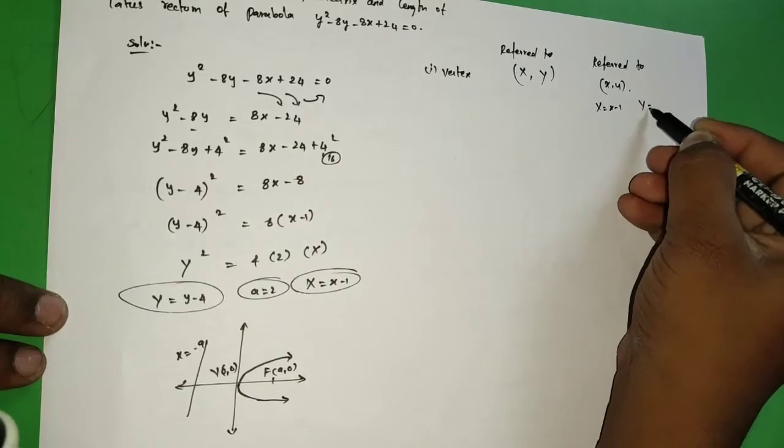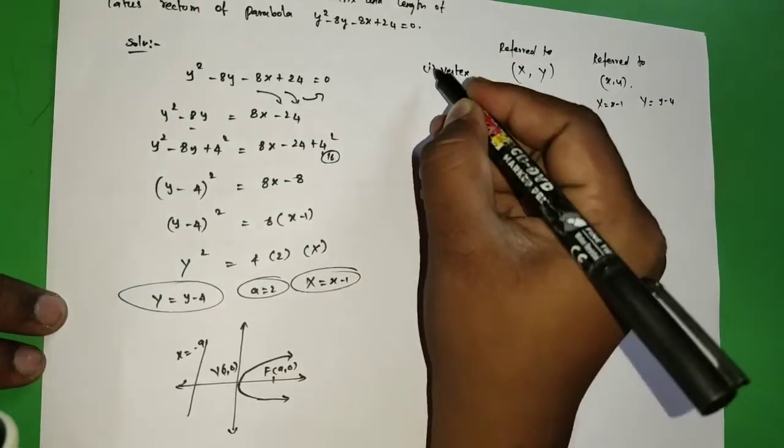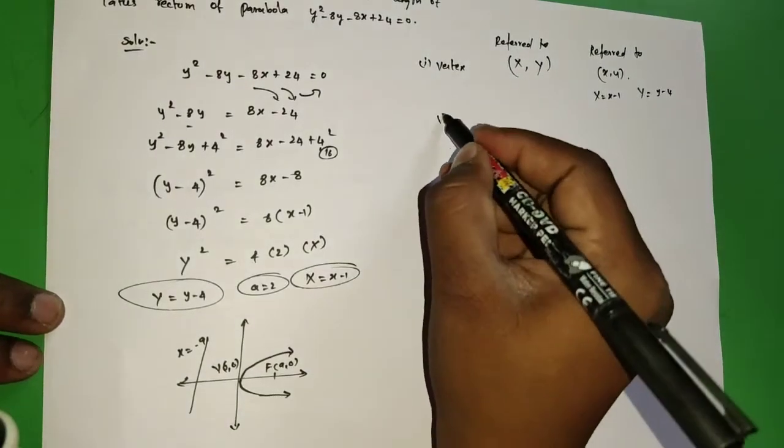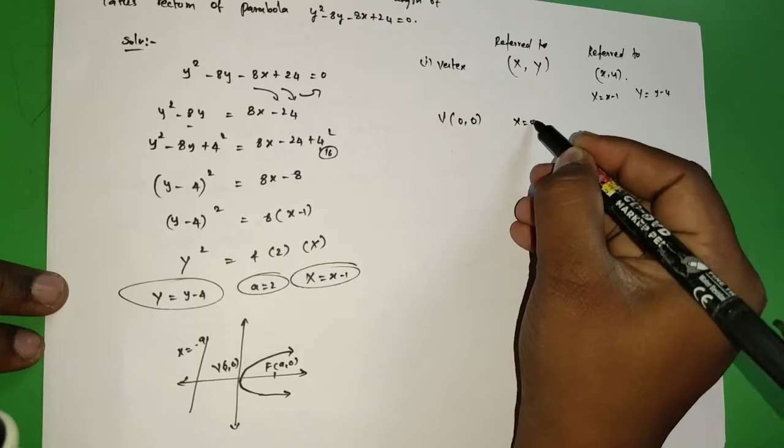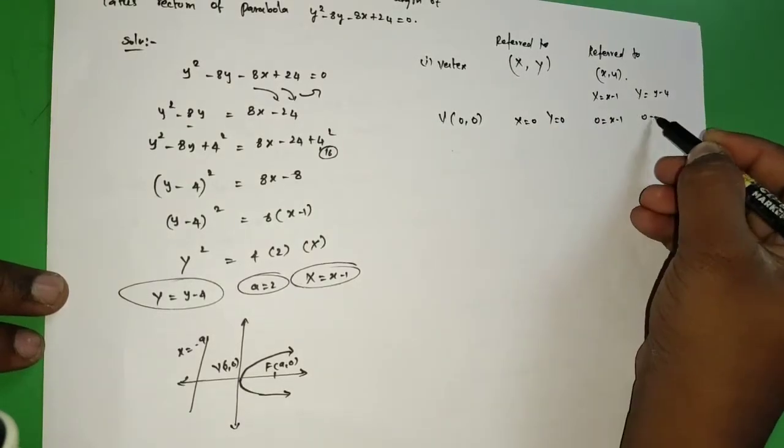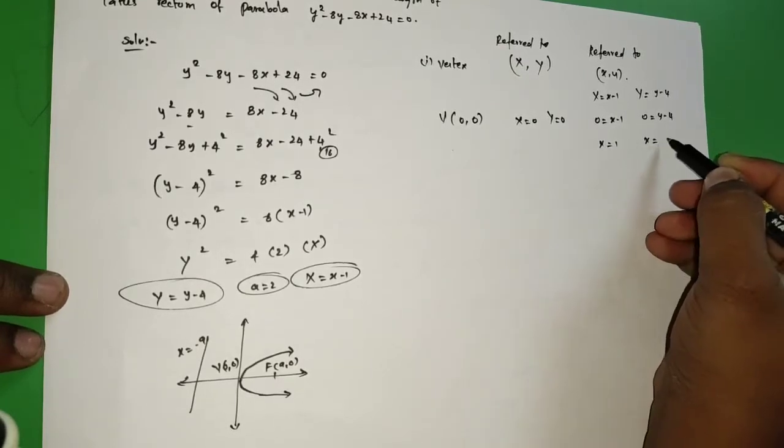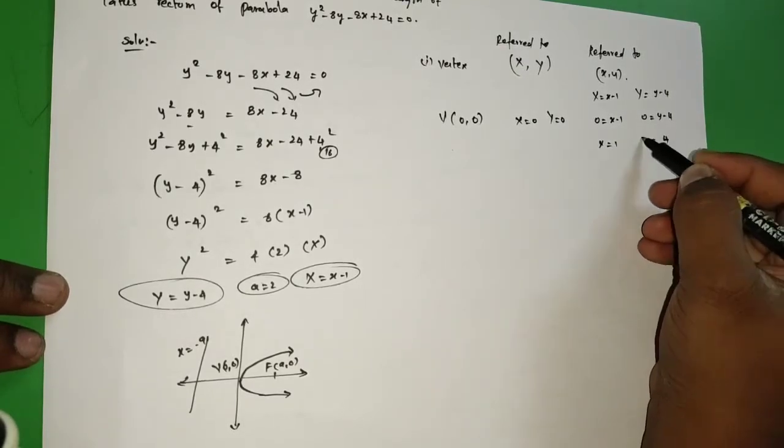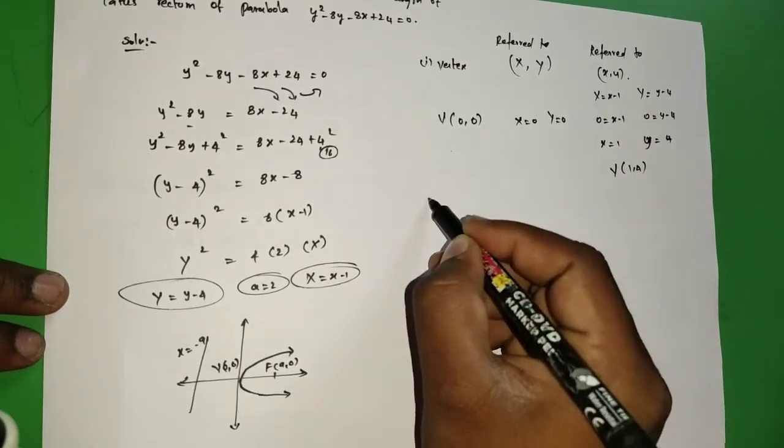For vertex (0, 0), here the capital X value is 0 and capital Y value is 0. Now we are getting x = 1 and y = 4. Therefore, the vertex is (1, 4).